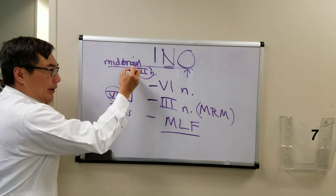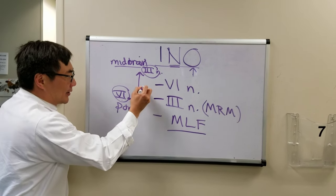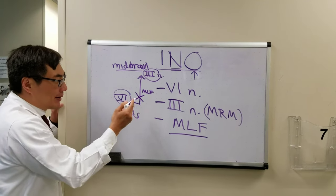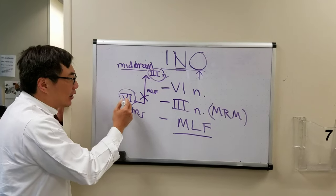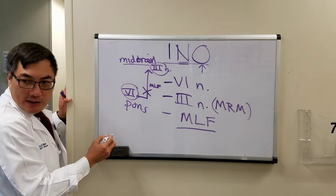This connecting point between the sixth and the third nerve nuclei is called the medial longitudinal fasciculus. And so if you disrupt the medial longitudinal fasciculus, you will be disconnecting the horizontal gaze input to the contralateral medial rectus muscle.